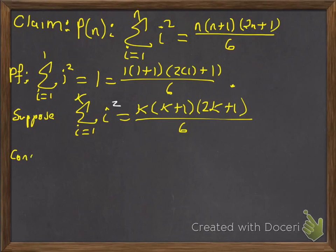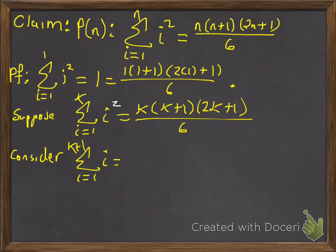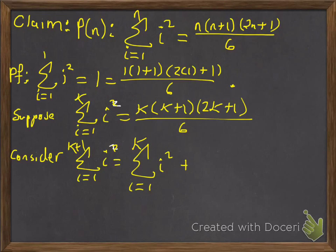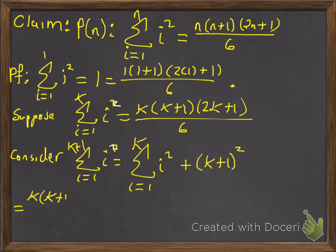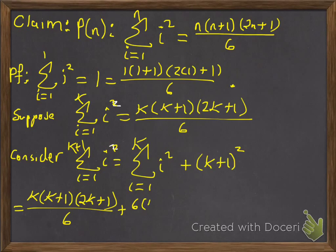So this is going to be a bit of algebra. We're going to consider the sum from i equals 1 to k+1 of i squared, and we'll break it up as the sum of the first k squares plus just the last term, which would be (k+1) squared. On that first summation we apply our induction hypothesis, giving k(k+1)(2k+1) over 6. We'll get a common denominator of 6, rewriting the other term as 6(k+1)² over 6.